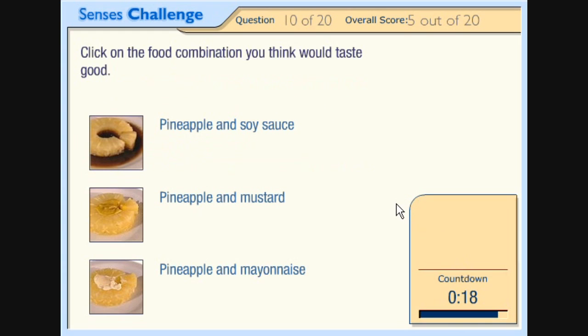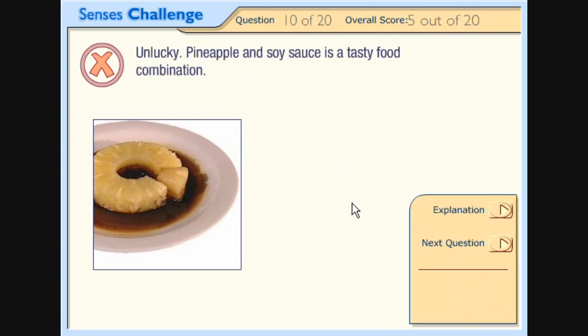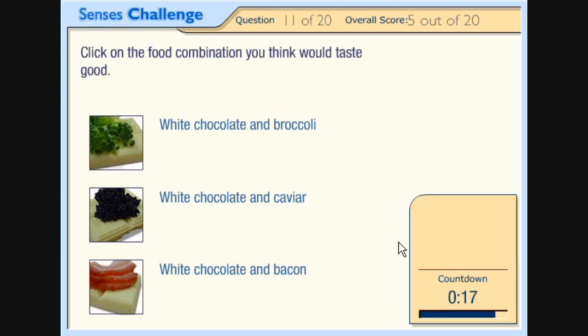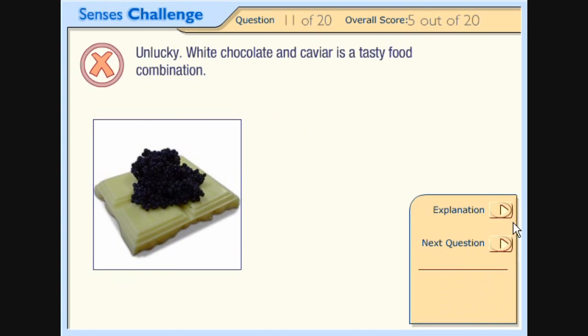Click on the food combination you think would taste good. Pineapple and soy sauce. Pineapple and mustard. Pineapple and mayonnaise. Yeah. Oh, that should be good. It's mayonnaise and pineapple. Ugh. Click on the food... How are you telling me I'm wrong? I might like pineapple and mayonnaise. How am I wrong? Click on the food you like. Or you think would taste good. White chocolate and broccoli. Mmm. Caviar. Blech. Throw it up. Bacon. Your caviar. Shove it up your ass.